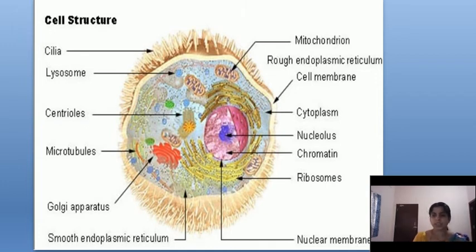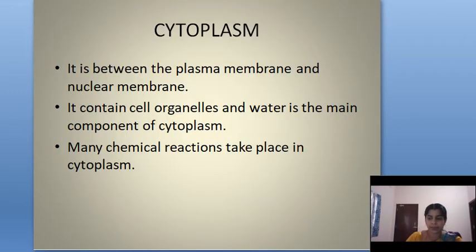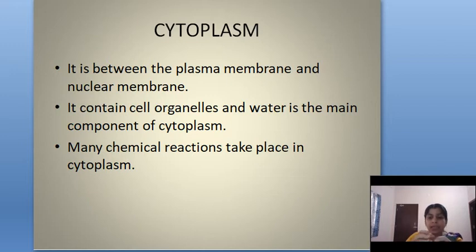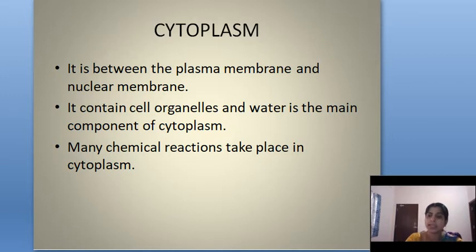For example, take an egg — an egg is a eukaryotic cell. The outer shell of the egg represents the cell membrane or plasma membrane. Inside it is a jelly-like, water-like substance — that is the cytoplasm. All the cell organelles are present in the cytoplasm.